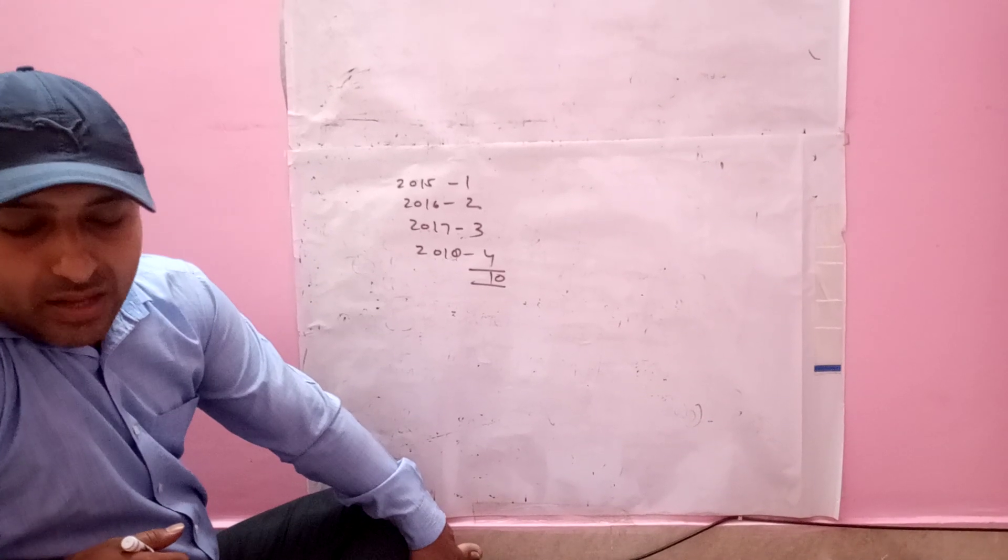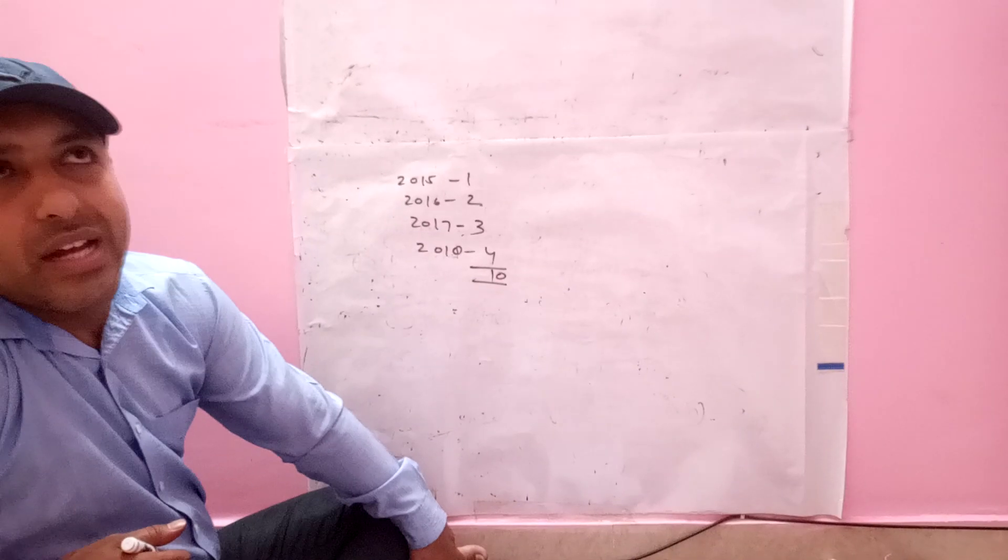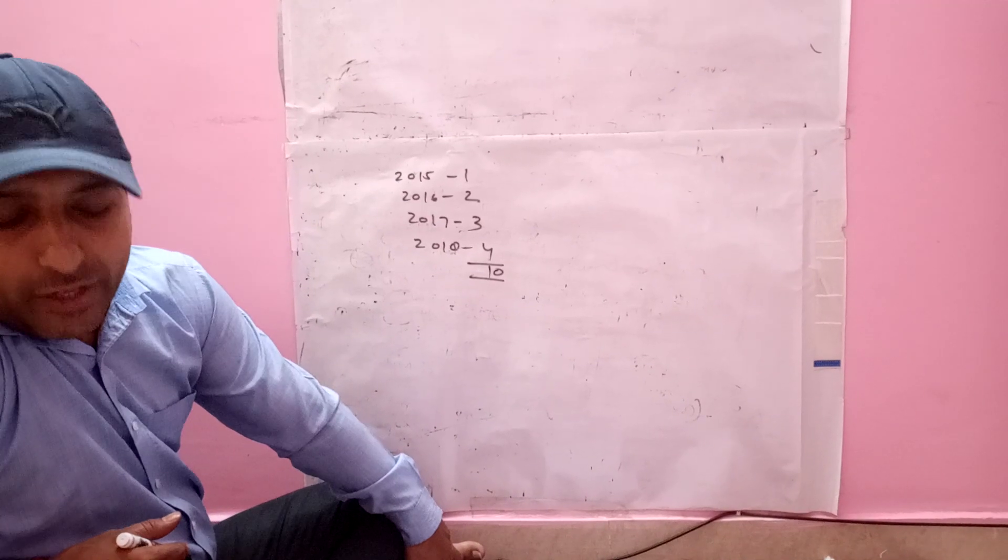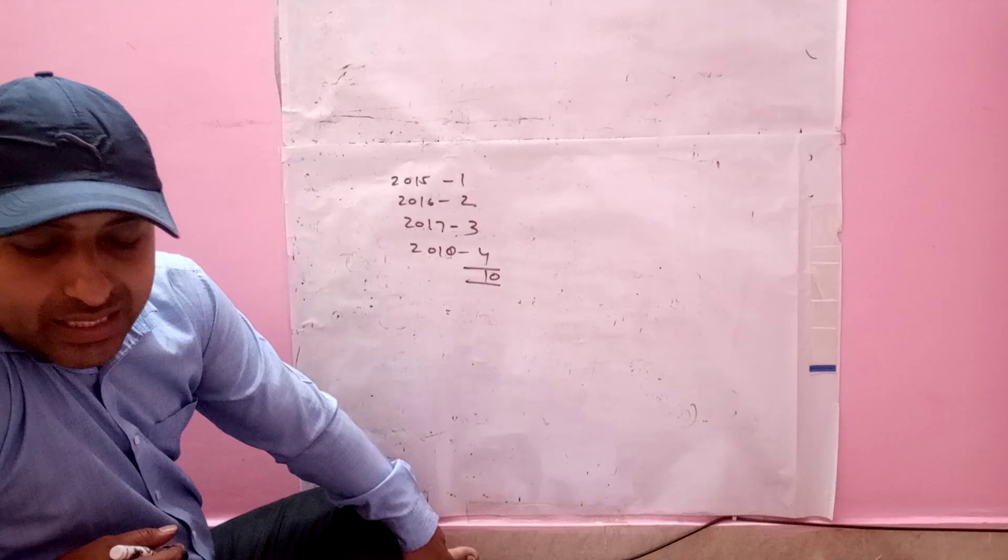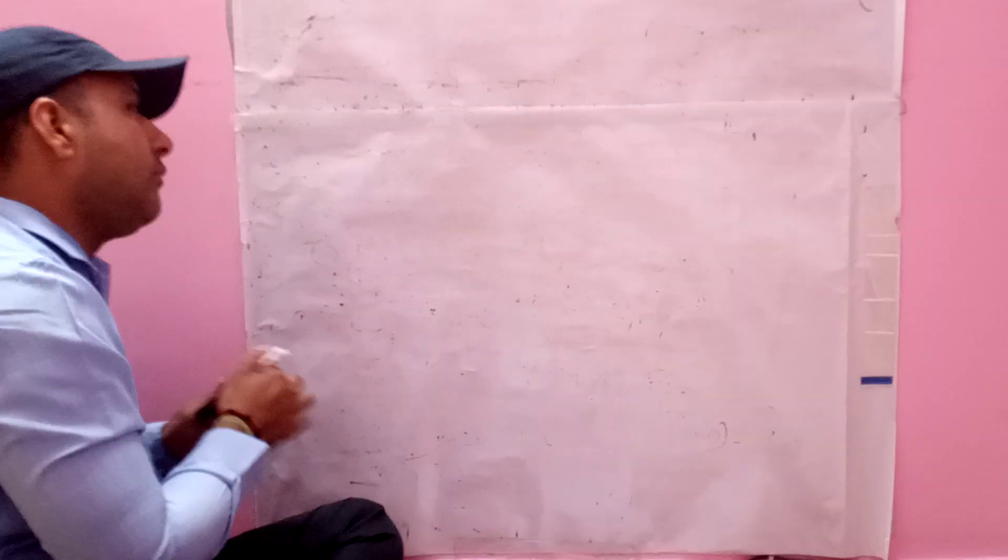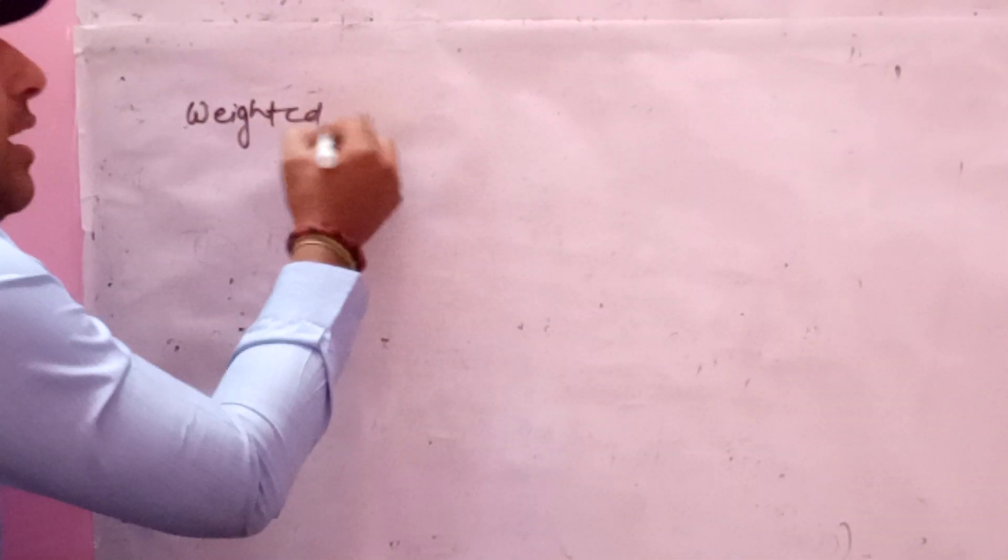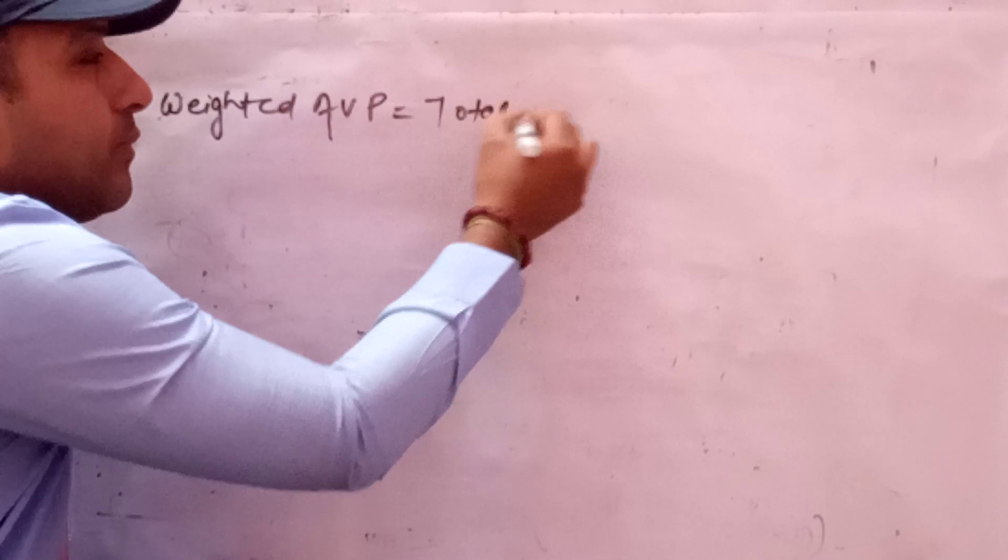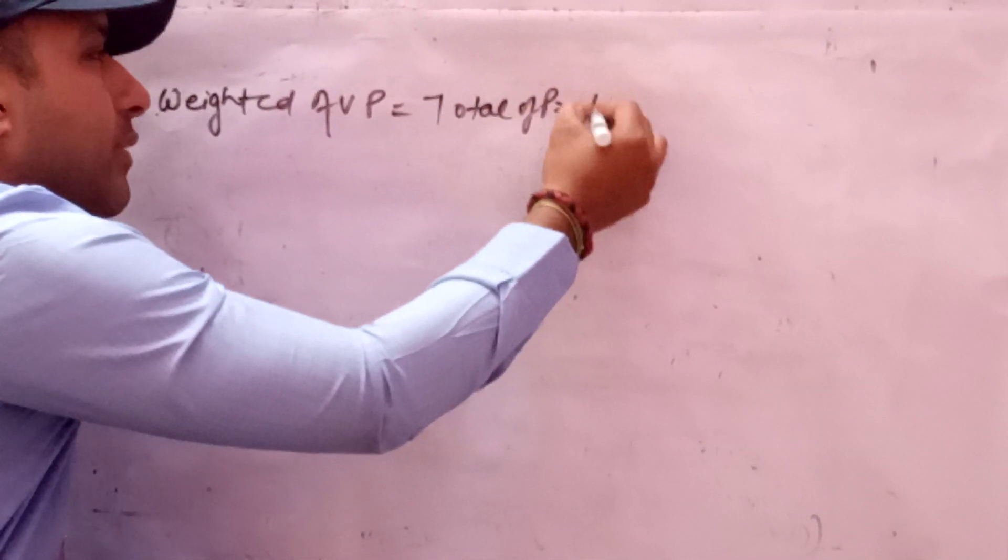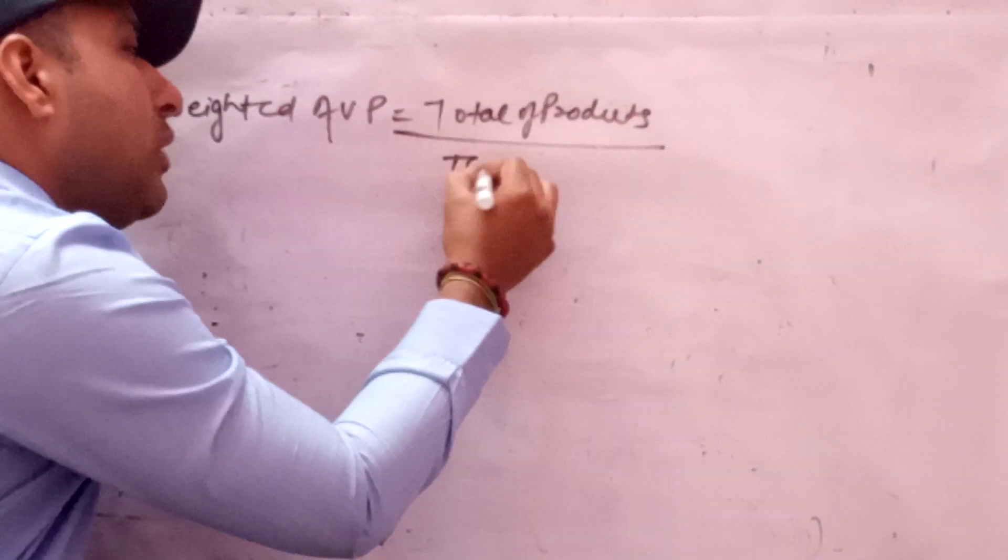After this, the weighted average profit is multiplied by the agreed number of years of purchase to find out the value of goodwill. The formula for weighted average profit is: weighted average profit equals total of products divided by total weight.